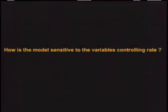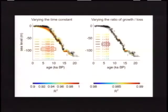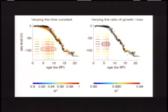What about the variables controlling rate — tau and the asymmetry function? Tau is fairly straightforward: for a very short tau, the response is too fast and sea level is too high during the termination; for very long values of tau, everything's too slow and you miss the start of the Holocene. There's good sensitivity to tau. The asymmetry term makes almost no difference whether included or not, because the only period of significant ice regrowth is during the Younger Dryas and during Heinrich 1 at the start of the termination. So really there are only two important variables that we're tuning to.